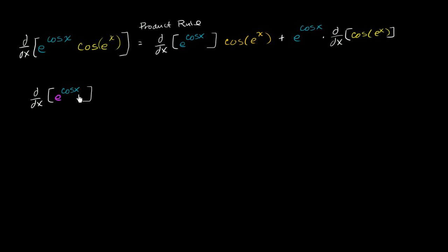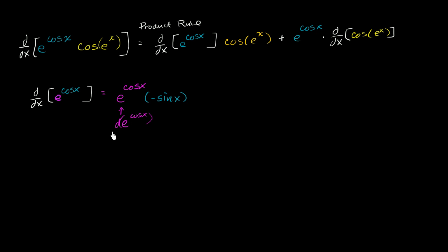The derivative of e to the something with respect to something is just e to the cosine of x. We have to multiply that times the derivative of the something with respect to x. The derivative of cosine of x with respect to x is just negative sine of x. So the first derivative is e to the cosine of x times negative sine of x — that's what the chain rule tells us.